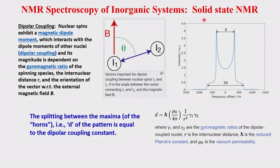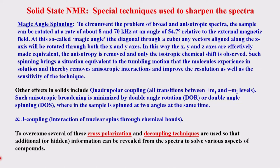The dipolar coupling can be measured from the two-horn separation. To get useful information, all these broadening mechanisms must be overcome using specific techniques. Magic angle spinning arose from the observation that in solution, fast molecular tumbling gives sharp lines. In solid state NMR, you take a powder of the sample and rotate it physically. It was found that rotating at speeds greater than the spectral width, at a specific angle with respect to the magnetic field — called the magic angle — causes maximum cancellation of anisotropy, asymmetry, and dipolar broadening.